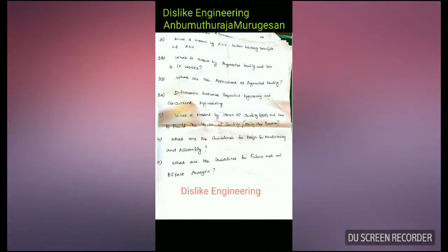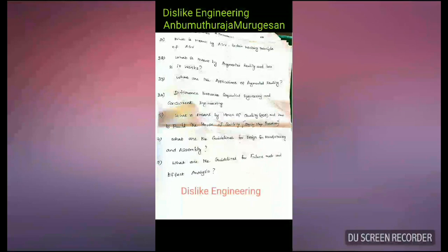The thirty-first question is: what is meant by AGV? AGV means Automated Guided Vehicle — explain the working principle of AGV. The thirty-second question is: what is meant by Augmented Reality and how does it work? The thirty-fourth question is: difference between Sequential Engineering and Concurrent Engineering. The thirty-fifth question is: what is meant by House of Quality and how to build the House of Quality?